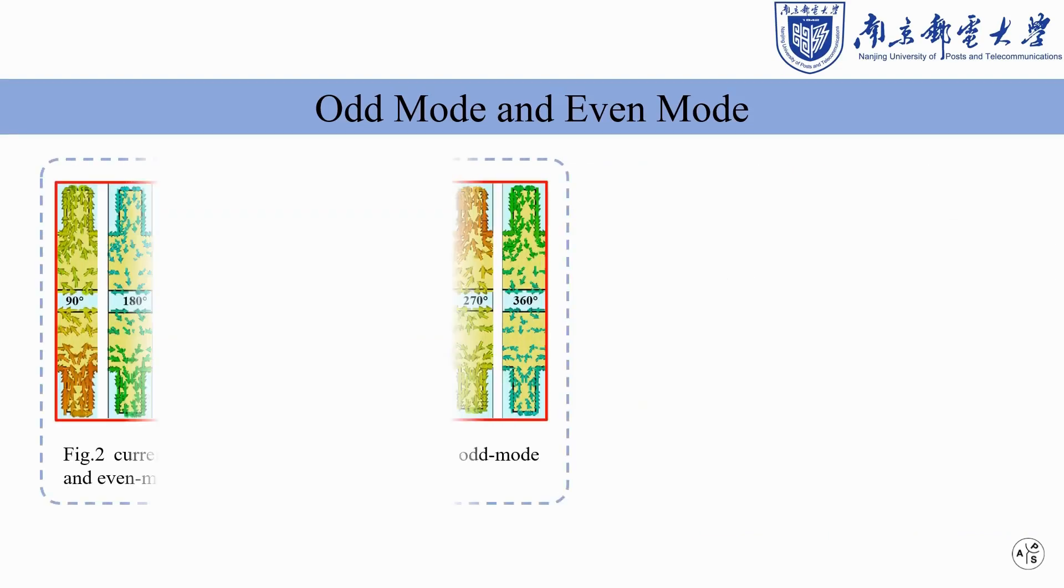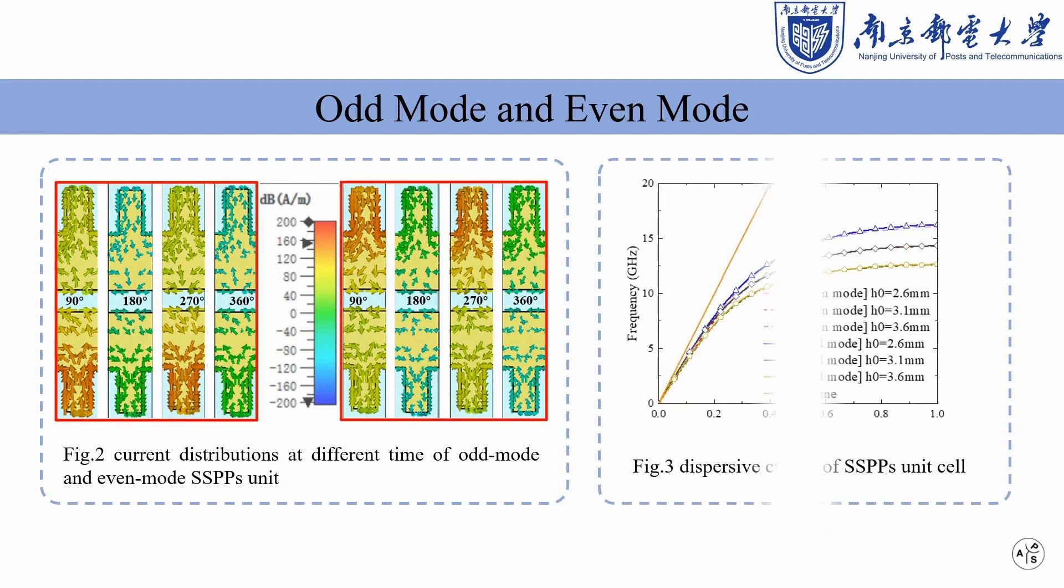As shown in FIG2, assuming the current distributions of this pair of SSPPs units are in phase and out-of-phase respectively. FIG3 shows the dispersive curves of SSPPs unit with different groove depths.